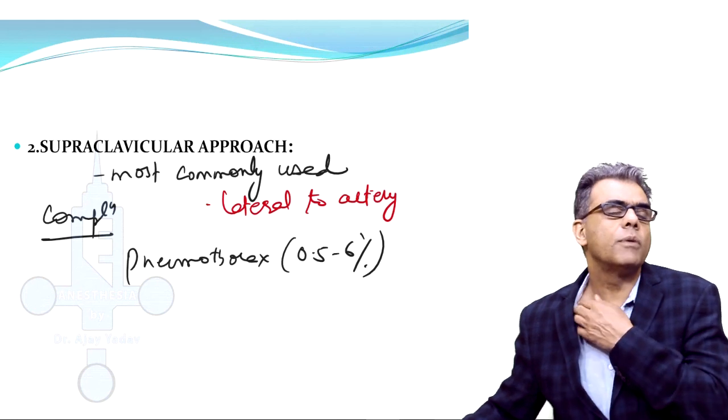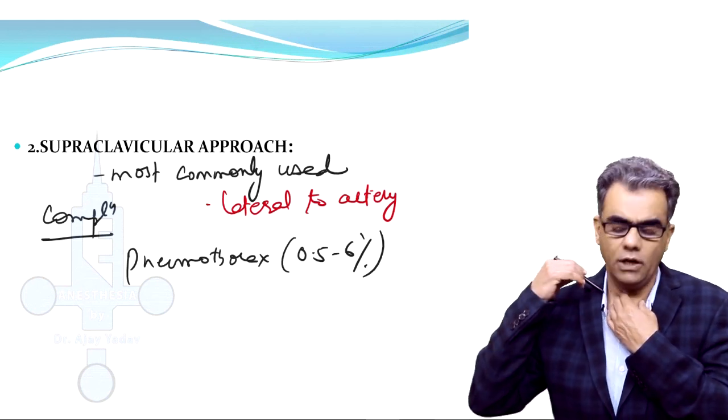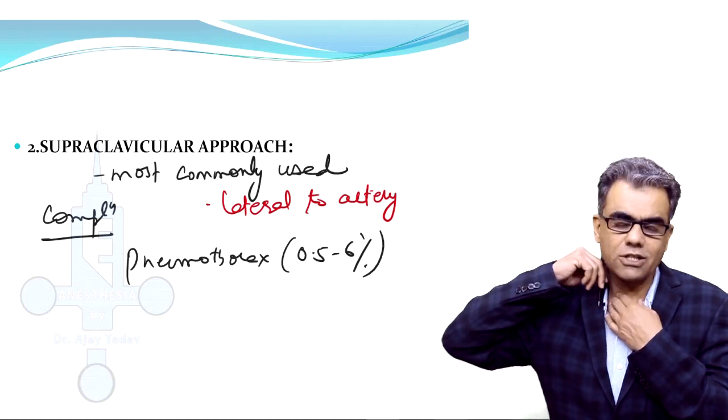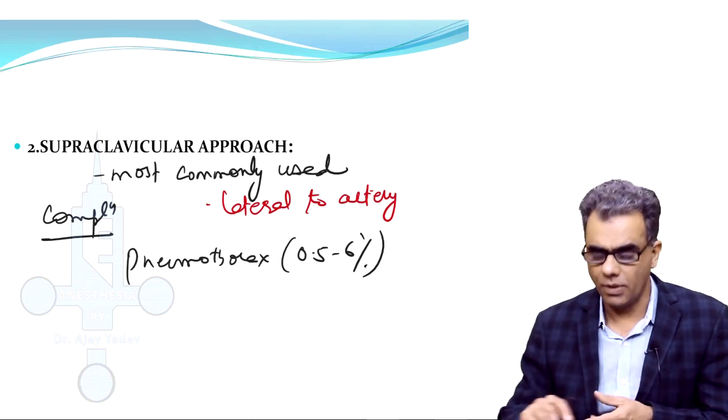Lateral to artery is very important because dome of the pleura comes medially. By chance if your needle becomes a little medial you can easily puncture the pleura. Direction should always be lateral to prevent pneumothorax.